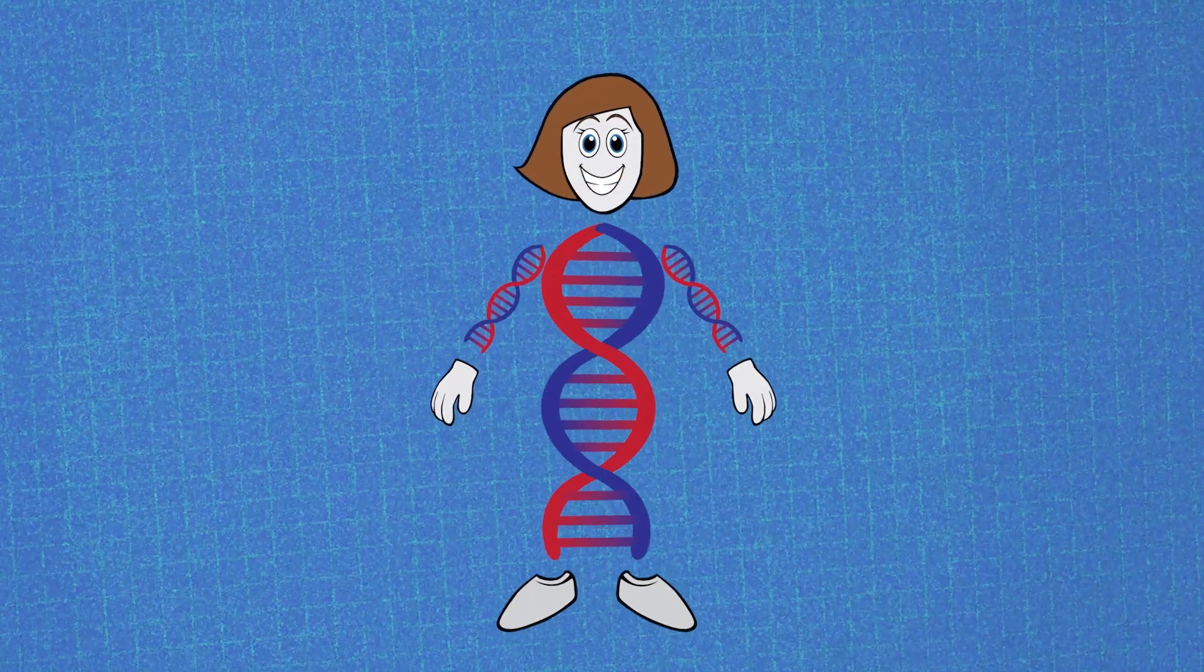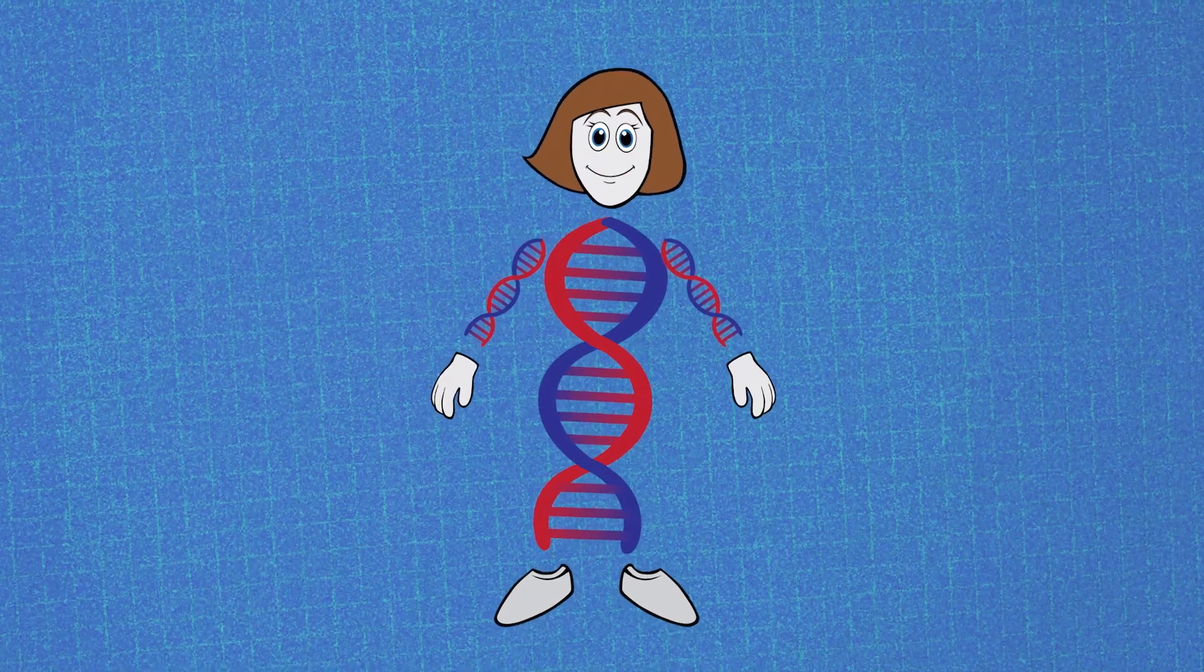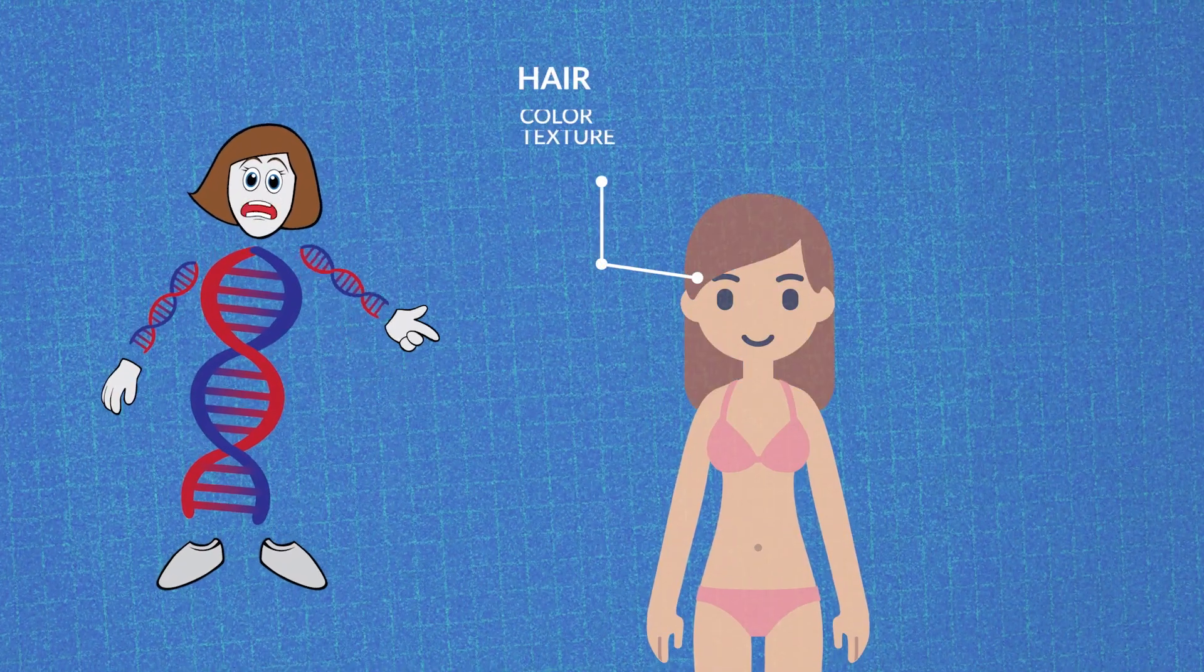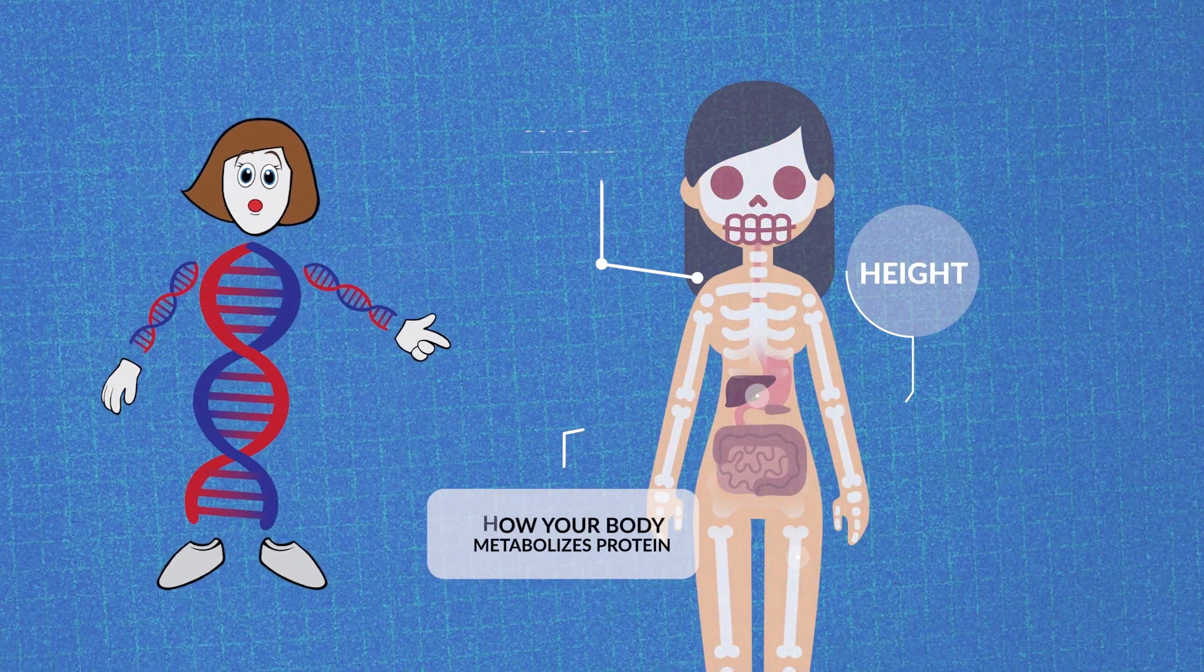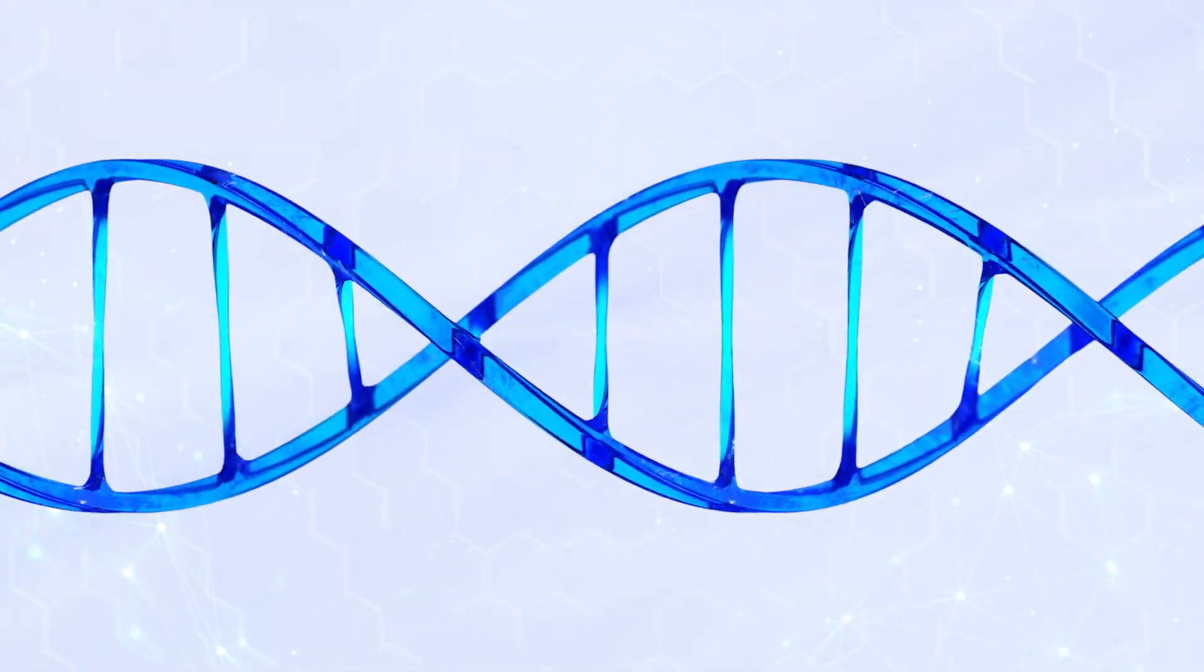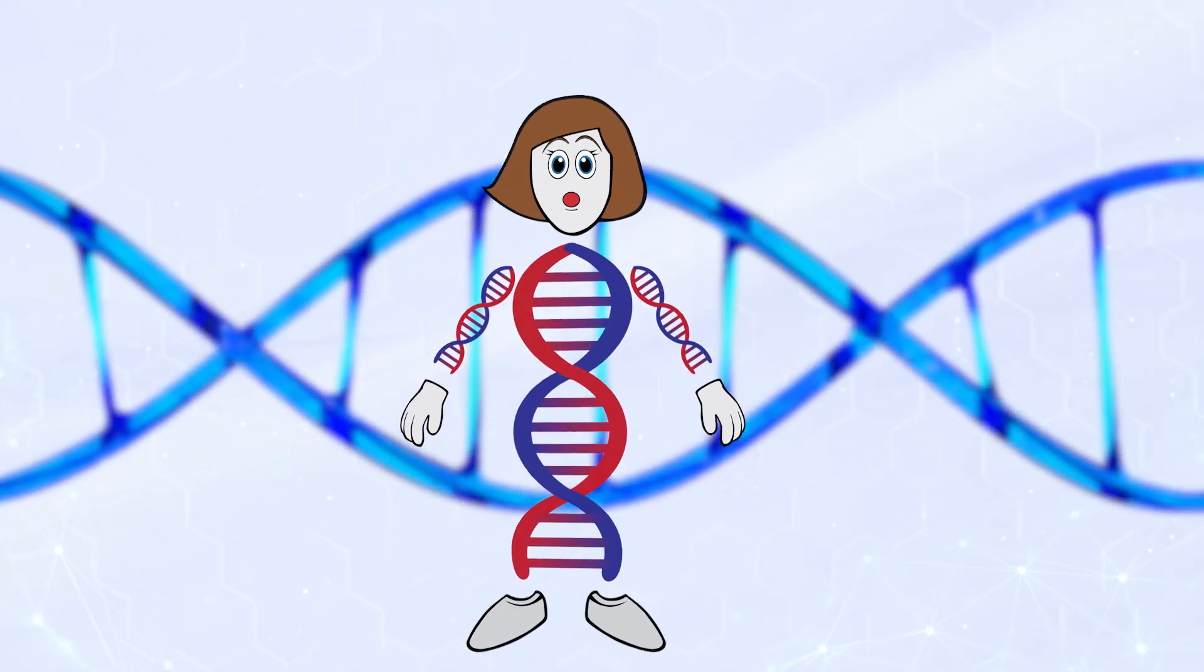Using this blueprint, cells are able to get to work. Genes affect everything from the color and texture of your hair, to your height, to how your body metabolizes protein in the food you eat. Genes are made from your DNA and carry your genetic information.